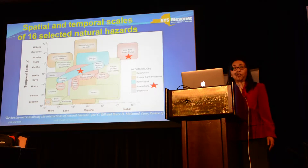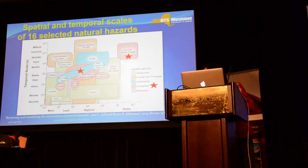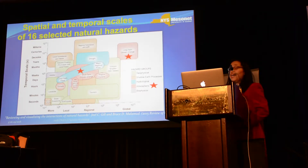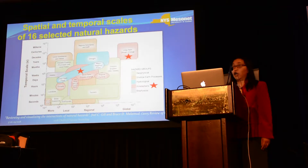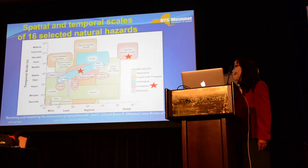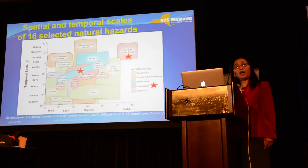Let's look at natural hazards. This shows you the spatial and temporal scales of 16 selected natural hazards in five groups. Let's look at flood. Flood is one of the hydrological hazards — flood and drought. Floods cover, in terms of spatial coverage, from very local flash floods to major regional floods, and in the temporal scale, all the way from several days to even months.